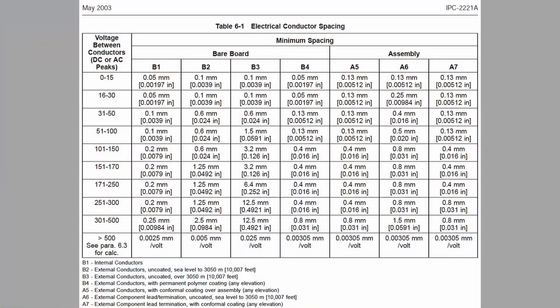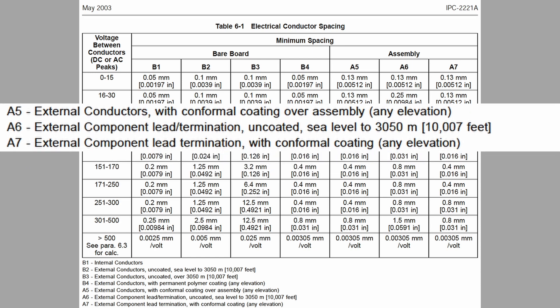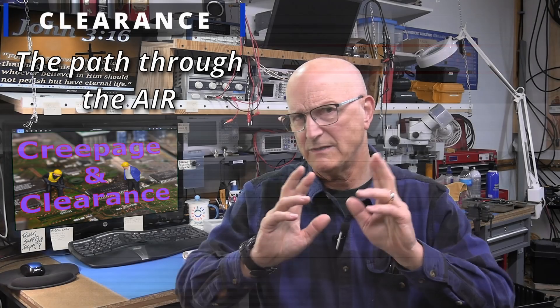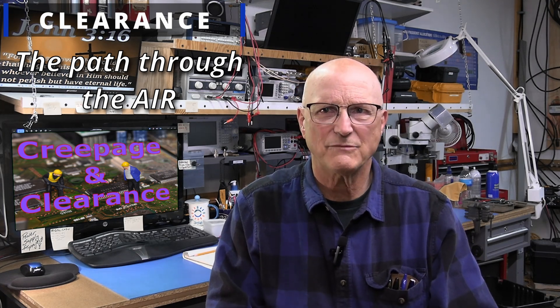Looking at the IPC 2221 standard, we are faced with somewhat different terminology. This is a PCB standard, so the terminology used therein is relative to the printed circuit board and overall assembly. What is commonly called clearance distance in the industry, they refer to as the assembly level external conductors. On table 6-1, page 43 of IPC 2221A dated May 2003, the columns of interest for clearance are the assembly columns A5, A6, and A7.